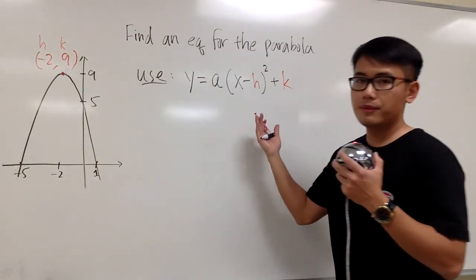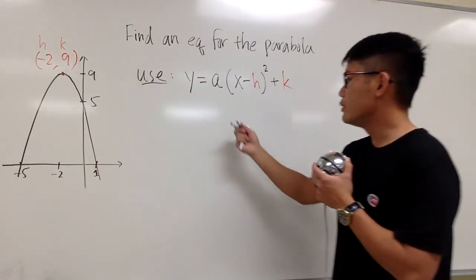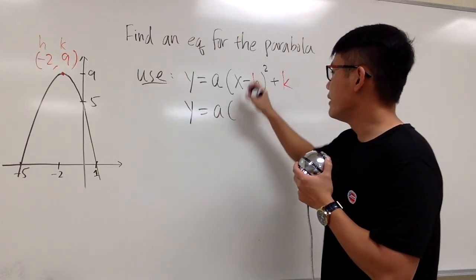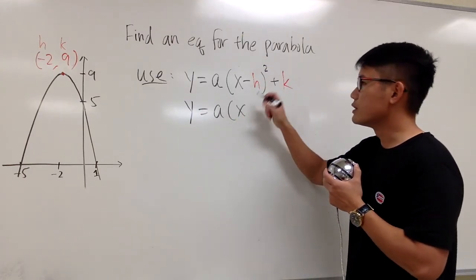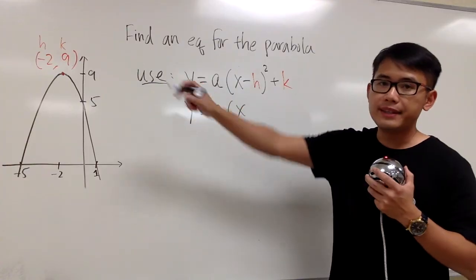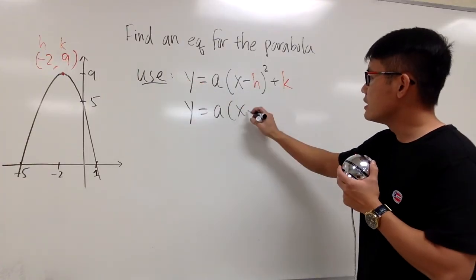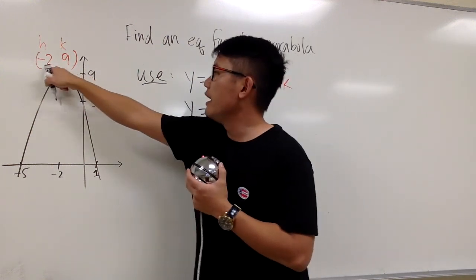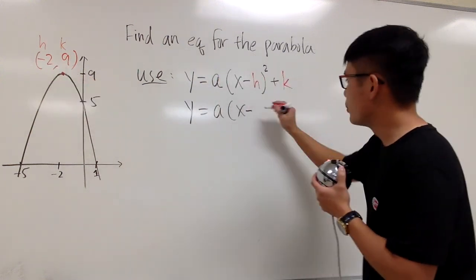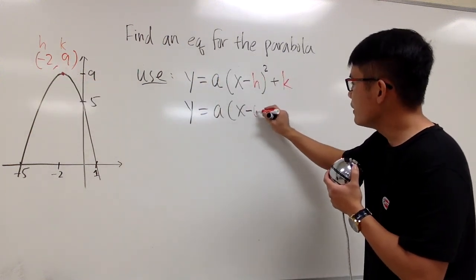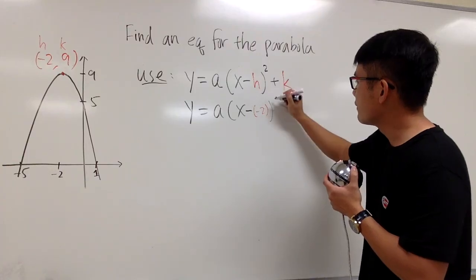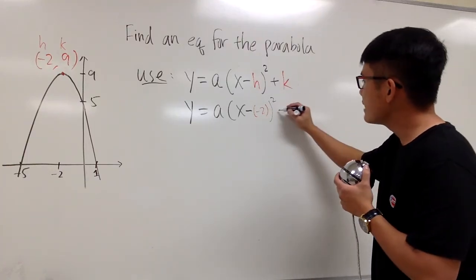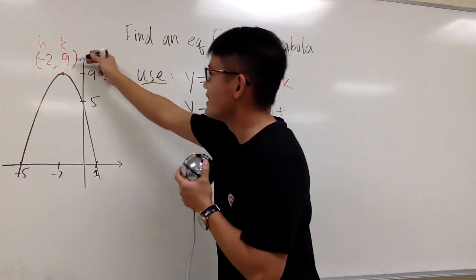Therefore, I can just plug in. So it looks like we will have y is equal to a — we don't know — and then x. The h we know is going to be negative 2. This minus is from the original form, and the h is the negative 2, so put this down as minus negative 2. We have that to the second power, and at the end we add the k value, which is 9.